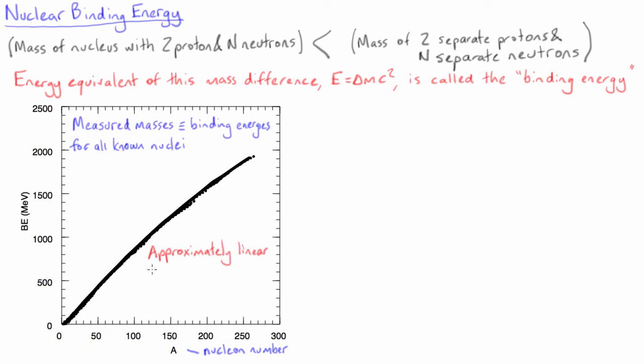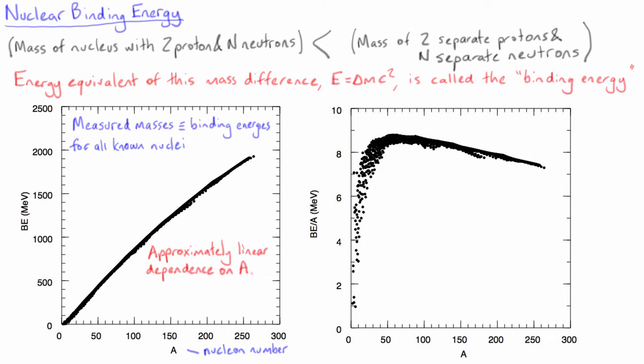It is clear that the binding energy has an approximately linear dependence on A. This leads us towards considering the quantity of binding energy per nucleon, dividing the measured binding energies by A.